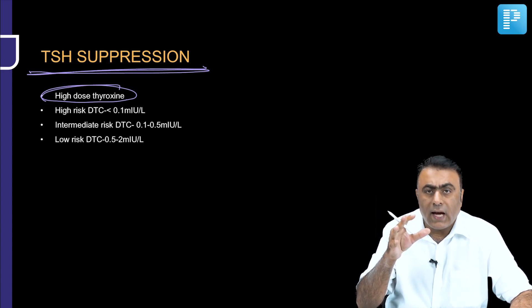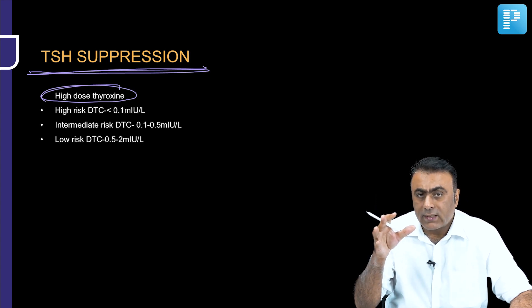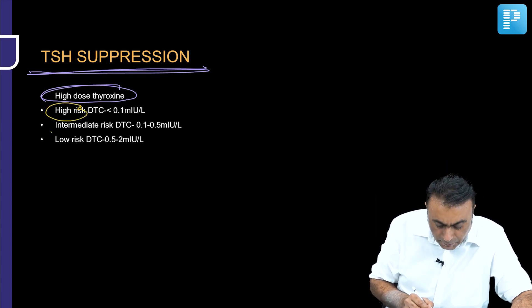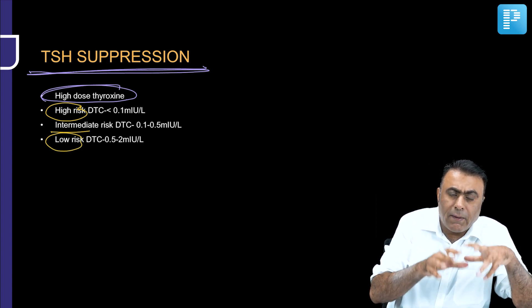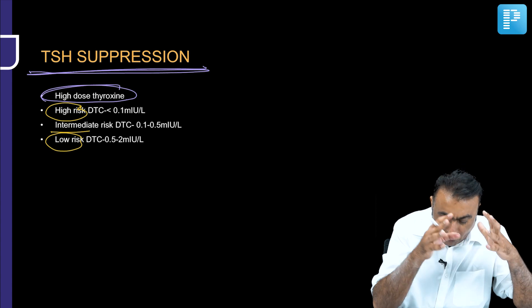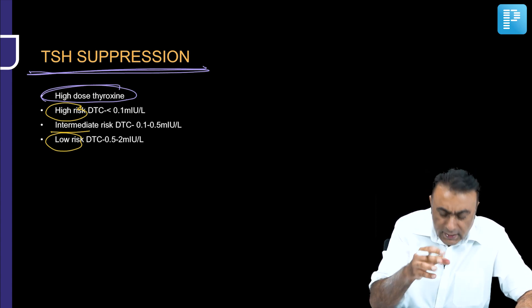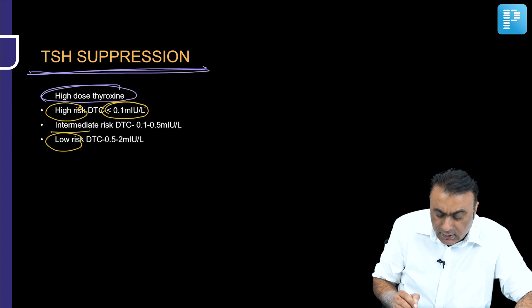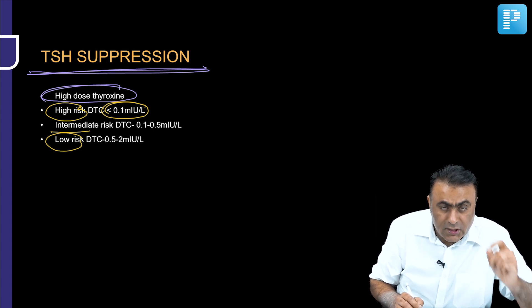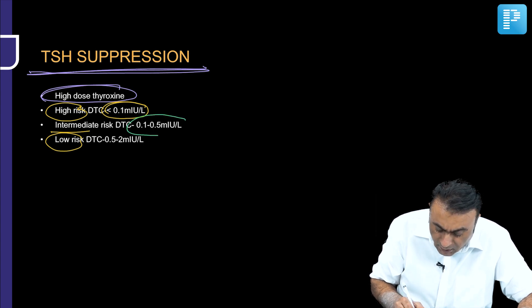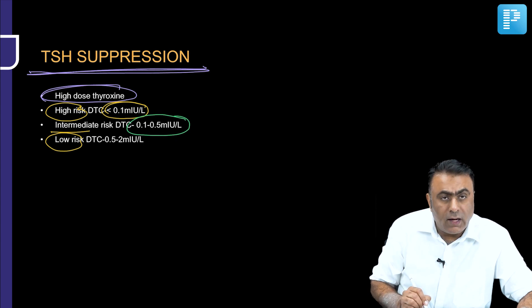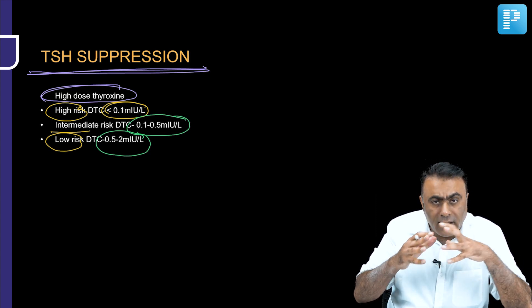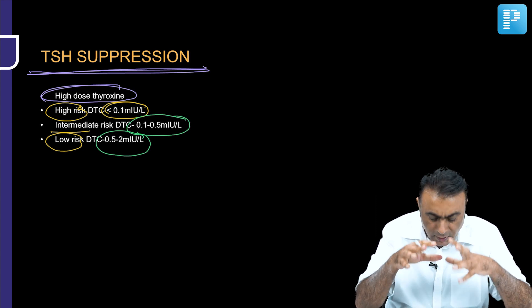As per American Thyroid Association guidelines, differentiated thyroid cancers are stratified into three groups by risk of recurrence. For high-risk cancers, TSH should be less than 0.1 milli-international units per liter. For intermediate-risk cancers, TSH should be 0.1 to 0.5 milli-international units per liter. For low-risk cancers, TSH should be 0.5 to 2 milli-international units per liter. Higher the risk of recurrence, more the suppression required.